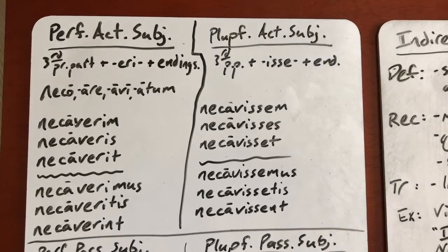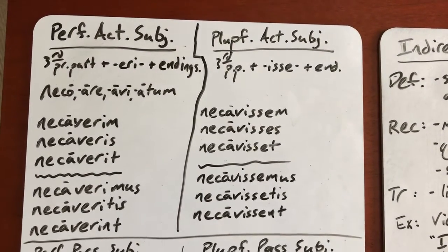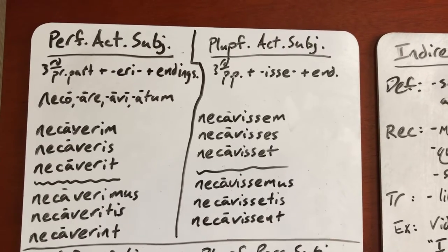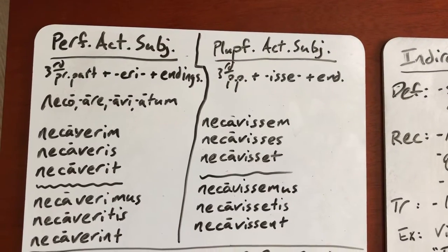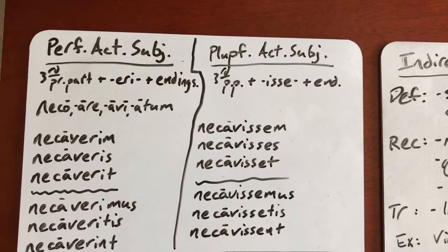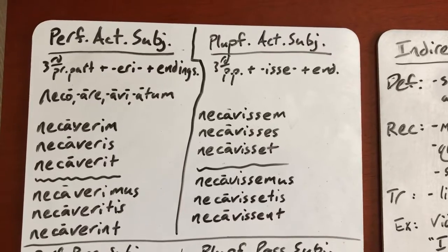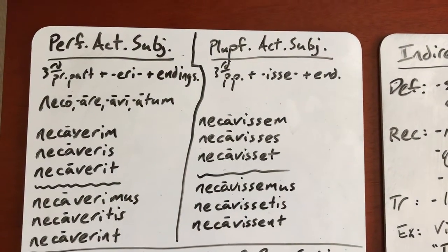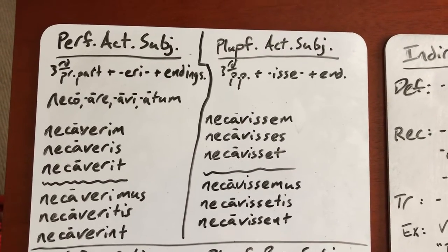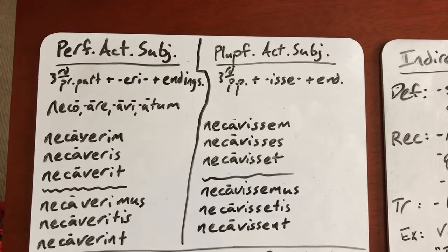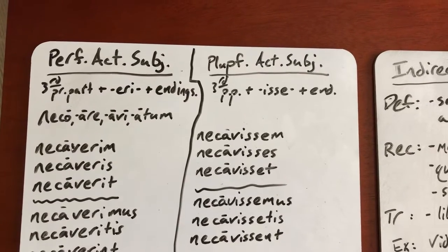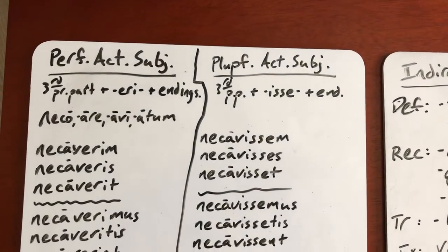For the pluperfect subjunctive, you do the same first step — third principal part, chop off your I, you get necav — and then for pluperfect you're going to add I-S-S-E. So necavisse, and then you add your endings: necavissem, necavisses, necavisset, and so on. The nice thing about these perfect ones is it'll be the same for all verb conjugations — you just go to that third principal part regardless of conjugation, chop off the I, and then add either E-R-I or I-S-S-E for perfect or pluperfect, and then your endings.